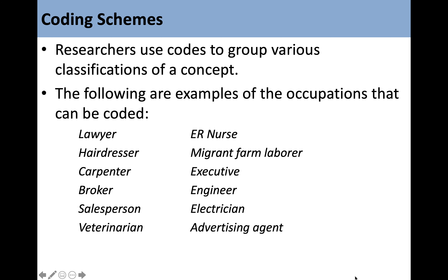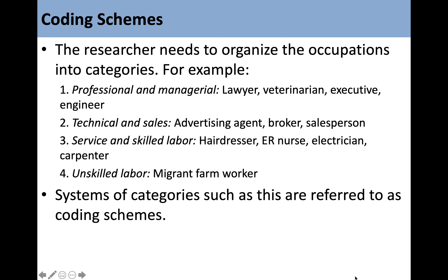The researcher needs to organize occupations into categories. For example: professional and managerial would include lawyer, veterinarian, executive, and engineer; technical and sales would include advertising agent, broker, and salesperson; service and skilled labor would include hairdresser, ER nurse, electrician, and carpenter; and unskilled labor would include migrant farm worker. Systems of categories such as this are referred to as coding schemes.